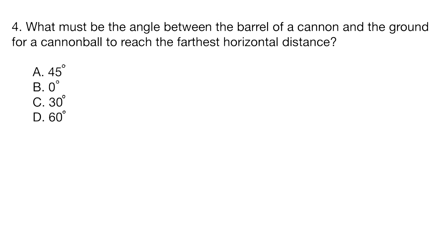Question 4. What must be the angle between the barrel of a cannon and the ground for a cannonball to reach the farthest horizontal distance? A, 45 degrees. B, 0 degrees. C, 30 degrees. Or D, 60 degrees.